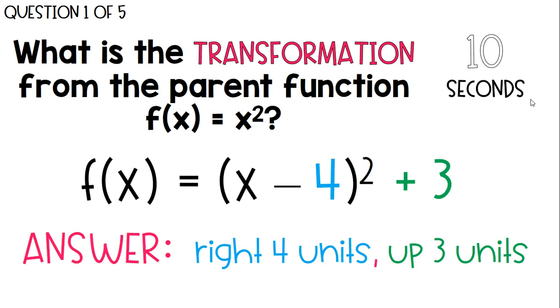This function would mean that since it's x minus 4, it's positive 4 units to the right, and then up 3 units. The a value was just still 1, so it didn't change its shape. But it's simply right 4 units, up 3 units.